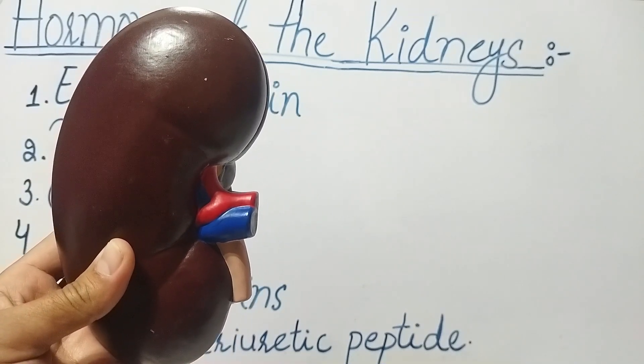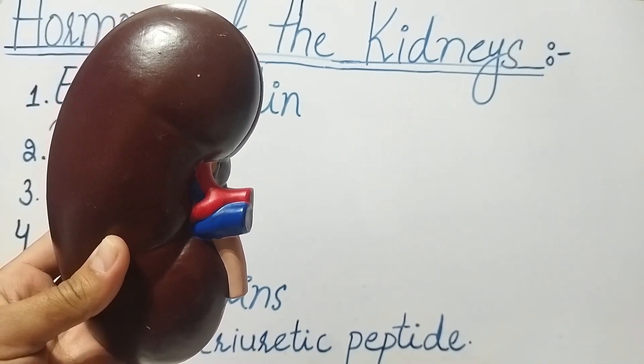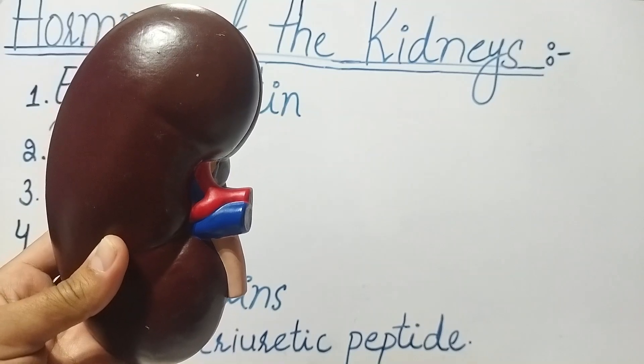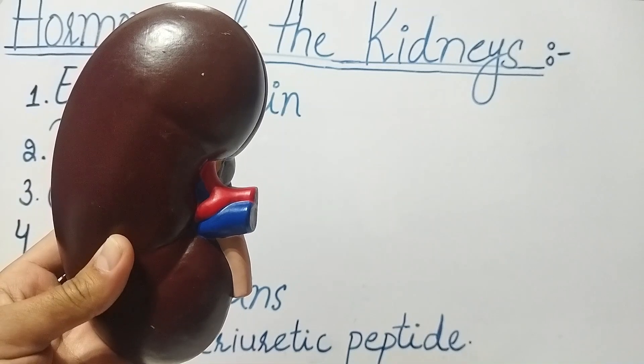Number second is renin. Renin is involved in the regulation of blood pressure. It is released in response to low blood pressure or low blood volume and it activates a series of reactions that increase blood pressure.